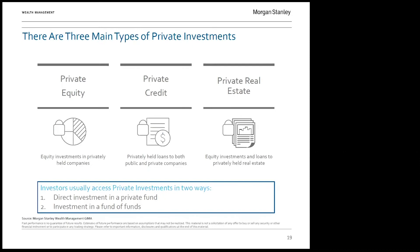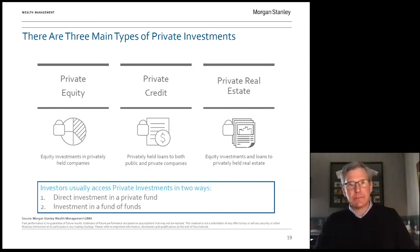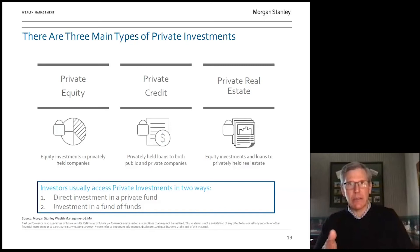Let's talk about the three main types of private investments. On the left is private equity — ownership of companies. The middle column is private credit — lending or fixed income. And on the far right is private real estate, which generally uses both equity as well as fixed income or lending. We'll take a look at each one individually.